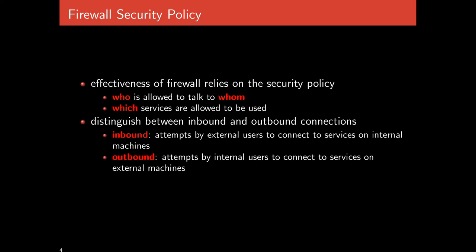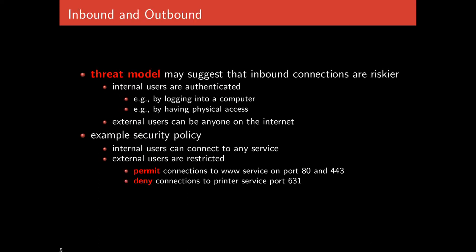In contrast, outbound connections are attempts by internal users to connect to services on external machines — for example, employees connecting to google.com. All traffic goes through the firewall whether inbound or outbound. The firewall is able to make access control decisions separately, allowing different kinds of traffic to be permitted or denied depending on whether it's coming from inside the organization going out, or coming from outside — essentially anyone on the internet — coming in.